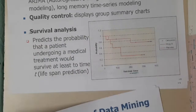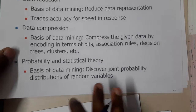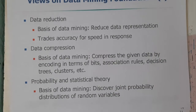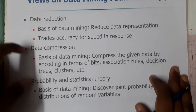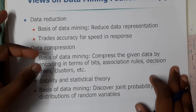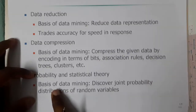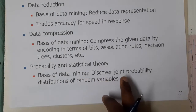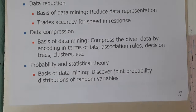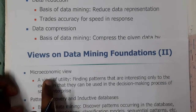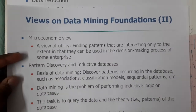The second major type is a view on data mining foundations. This includes data reduction — reducing the size or representation of the data. Similarly, data compression compresses data in terms of bits, rules, trees, and clusters. Probability and statistical theory form the basics of data mining, including discovery of joint probability, which we discussed in Bayes' theorem. There is also a micro-economical view, and pattern discovery — discovering patterns is also possible through this view.